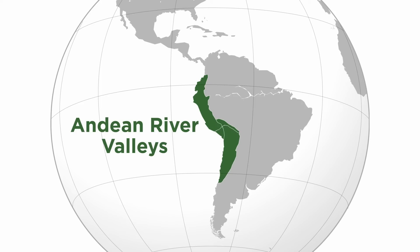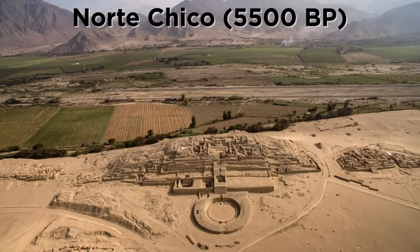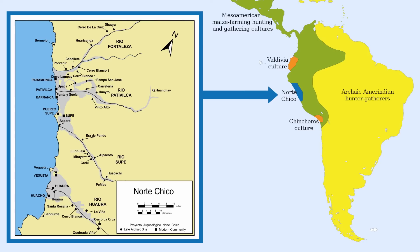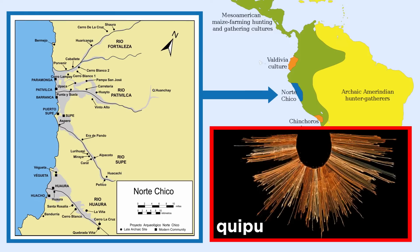South American civilization began in the western river valleys of the Andes Mountains, namely in Peru. The first civilization to emerge in the region was the Norte Chico around 5500 BP, putting it in the running for one of Earth's oldest civilizations. Existing until 3800 BP, they were the first people we know to use kipu, a system of knots used for record keeping among Andean civilizations that is still undeciphered.